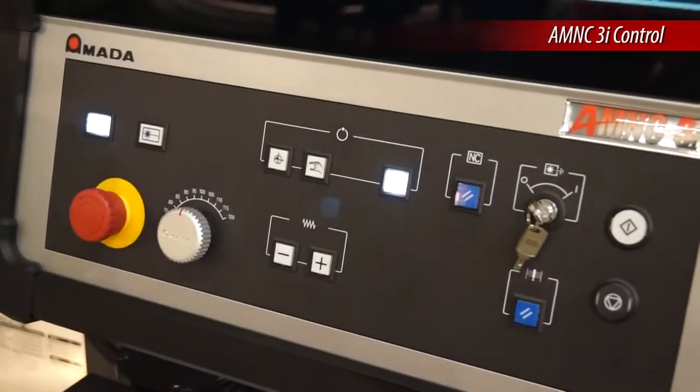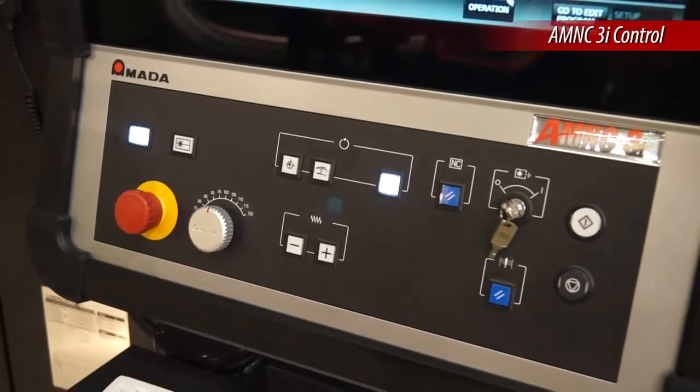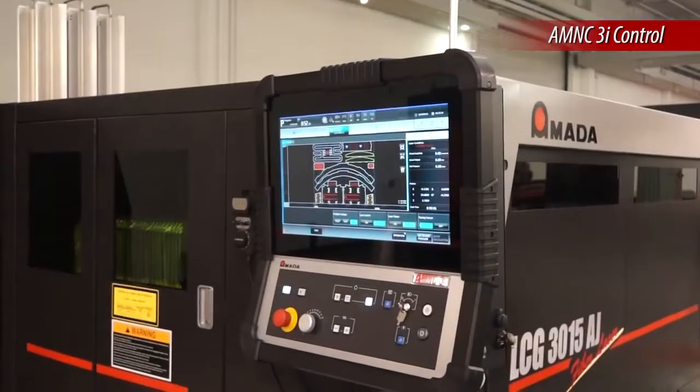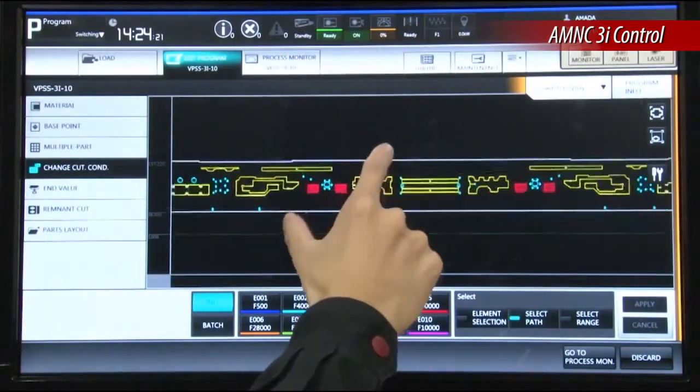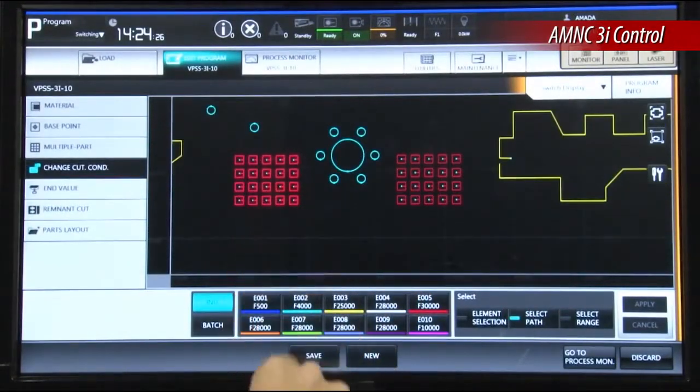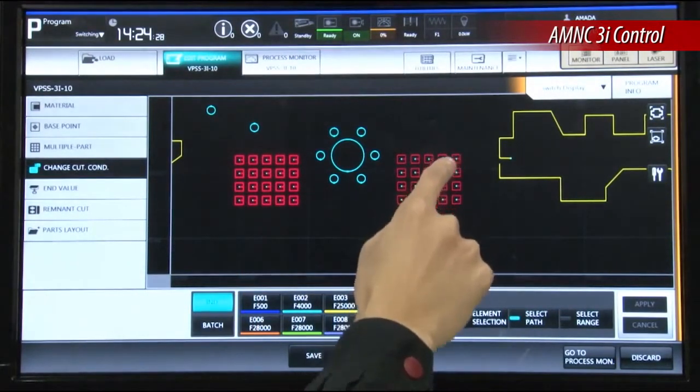To control all of the machine's functions, the LCG-AJ is equipped with the AM NC3i touchscreen control. The large 21 and a half inch touchscreen allows users to efficiently visualize and perform tasks on this control.